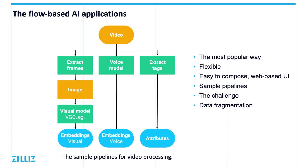The middle pipeline handles sound, generating audio feature vectors from an inputted audio stream. The rightmost pipeline automatically labels some attributes for the videos. If you have other special requirements, you can build a new pipeline to do the related processing. This is why flow-based AI applications are so popular — because they are flexible. Developers don't even have to write code; there are web-based interfaces to help users compute the new process, and you can usually find useful samples online.